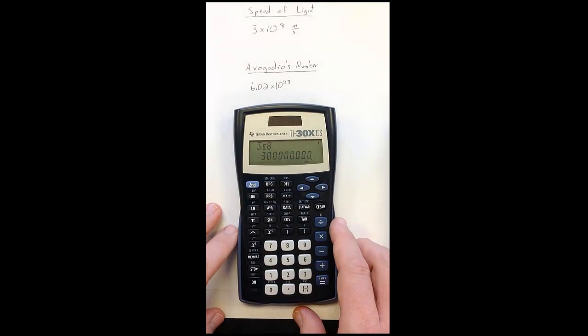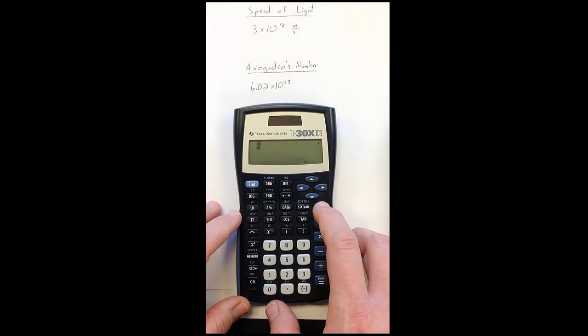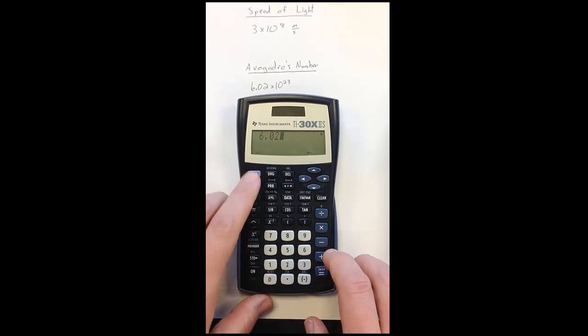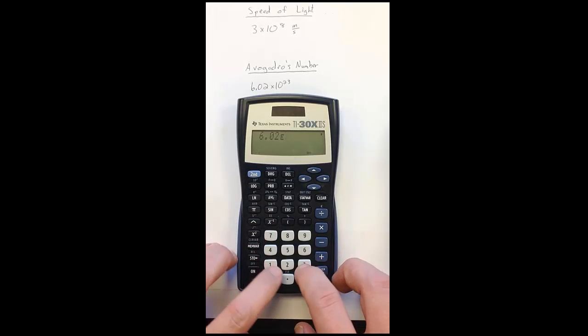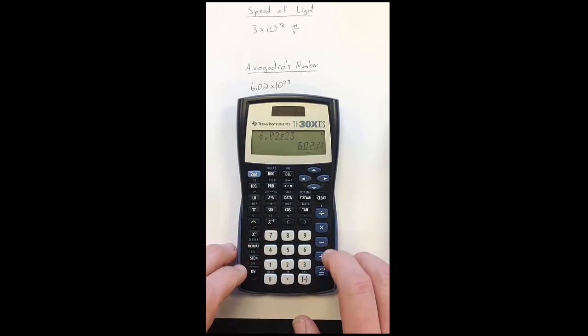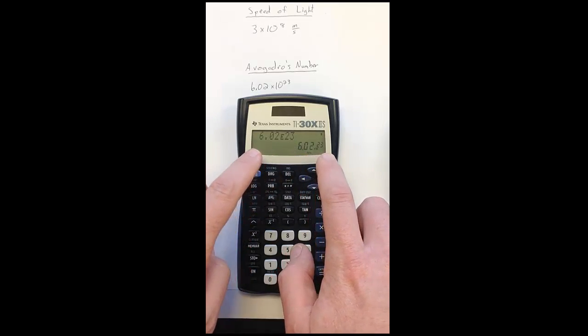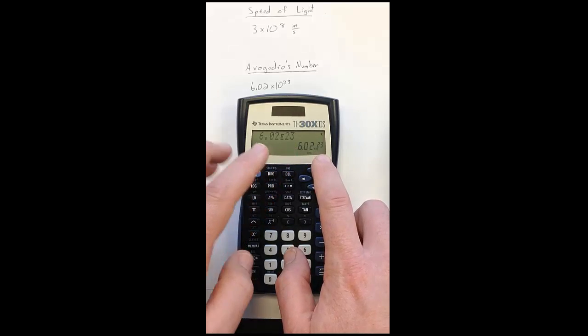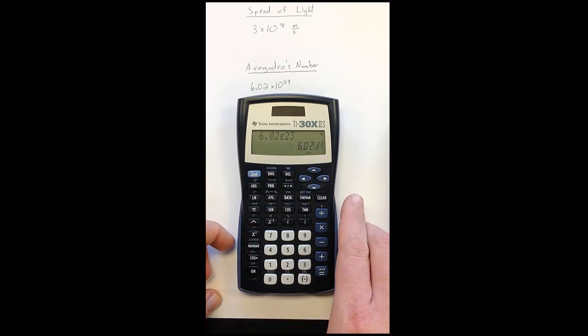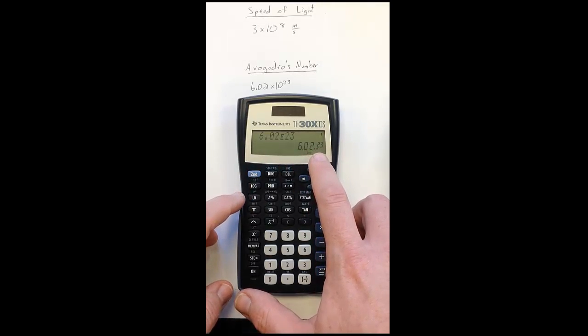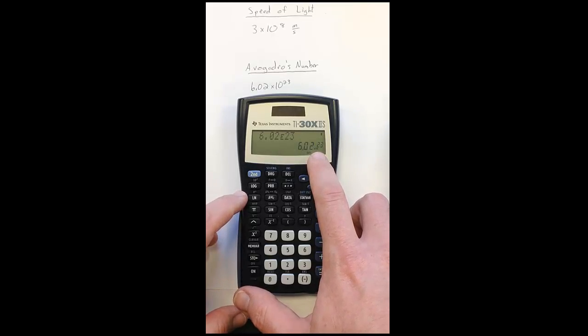If we take another number that we commonly use in chemistry, Avogadro's number, 6.02 times 10 to the 23rd power—as I put this in, start with my base number, second EE, 23. When I evaluate this one, notice the answer goes straight to scientific notation. We don't see it filling the screen, and that's because with 23 to the power, that means we're going to have 21 zeros after that two. That's way too big for the screen, so the calculator automatically defaults to scientific notation. Notice the times 10 is really tiny, so you've got to be careful that you don't miss that and think 6.02 raised to the 23rd power, which is not the same thing.